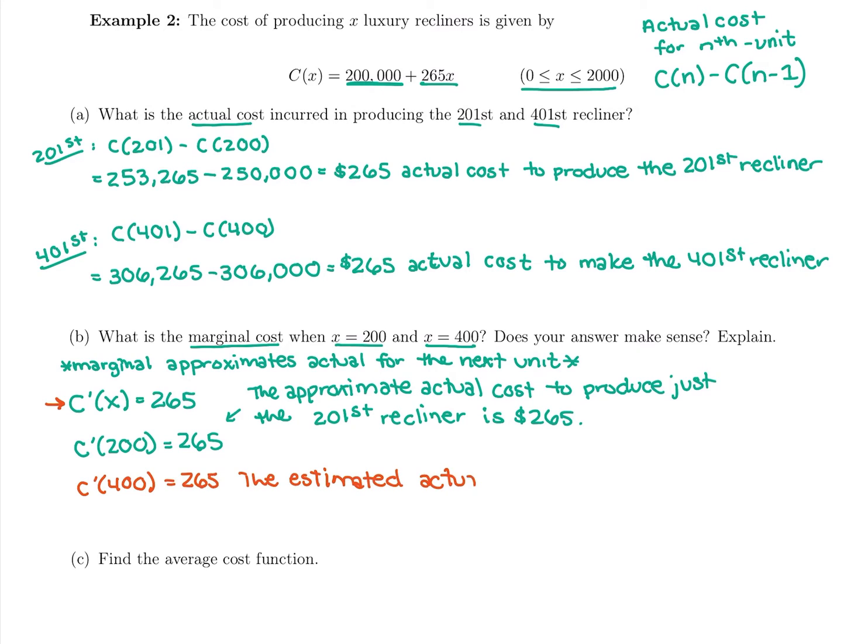to make just the 401st, always the next unit, so we're estimating the actual cost to produce, to make just the 401st recliner is $265. So it does a very good job estimating, we got the exact answer that we needed.